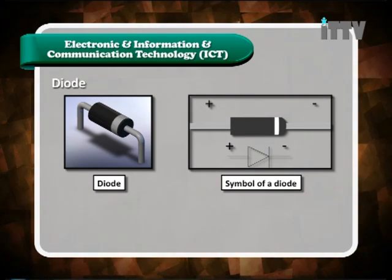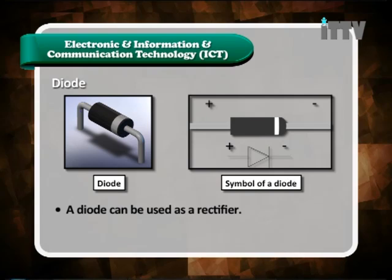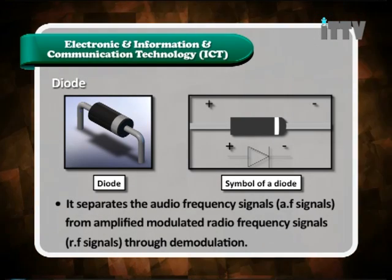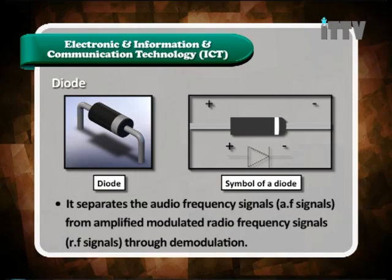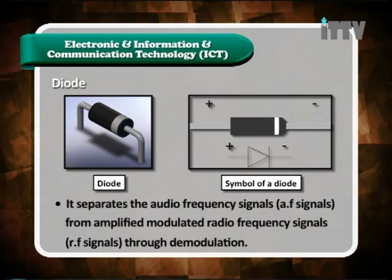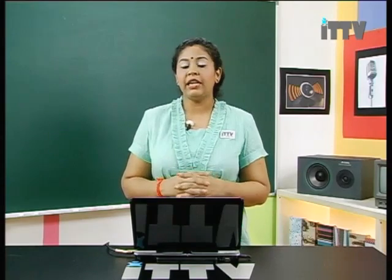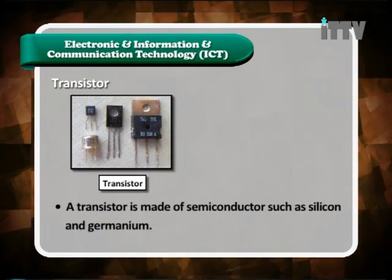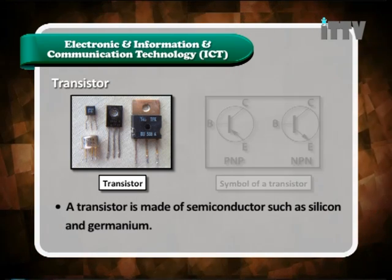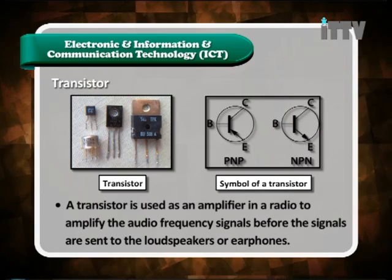Here is a picture of a diode and the symbol of a diode. A diode can be used as a rectifier — it separates the audio frequency (AF) signals from the amplified modulated radio frequency (RF) signals through demodulation. The diode is part of our demodulation system, whereby it separates the RF and AF signals. You will learn in detail about this demodulation process in the next slides, so here you just need to know the function of a diode.